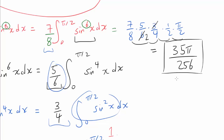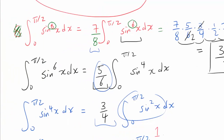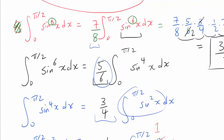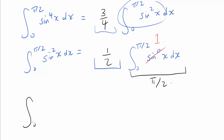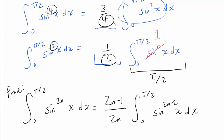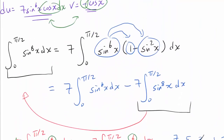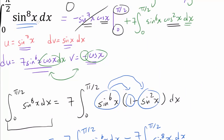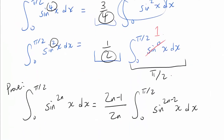Before we are 100% sure of our answer, we have to prove our assumption. We have conjectured that ∫₀^{π/2} sin(x)^{2n} dx = ((2n−1)/(2n))·∫₀^{π/2} sin(x)^{2n−2} dx. We can prove this the exactly the same way as we simplified our original integral to sin(x)^6, by applying integration by parts.